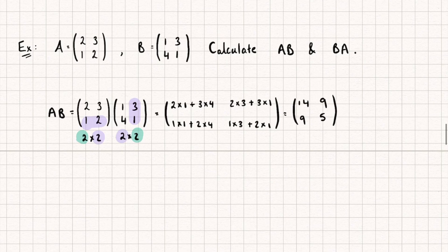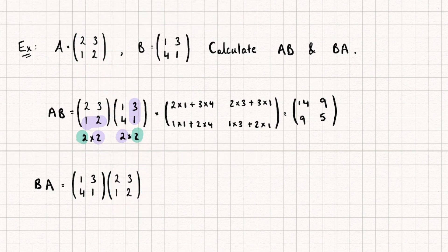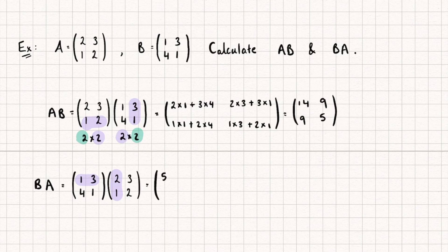For the second part we're going to calculate matrix BA. Let's bring down a copy of both matrices. First row, first column: 1 times 2 is 2 plus 3 times 1, giving us 5. First row, second column: 1 times 3 plus 3 times 2 gives us 3 plus 6, which is 9. The bottom left element: 4 times 2 is 8 plus 1 is 9. And finally 4 times 3 is 12 plus 2, which is 14.